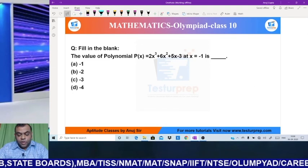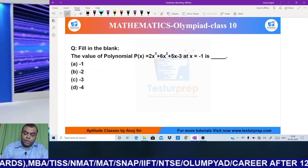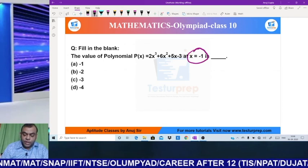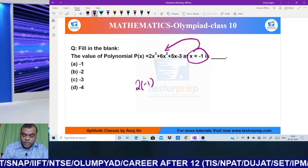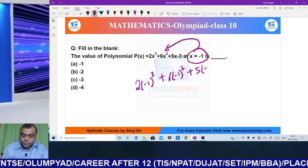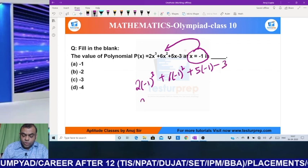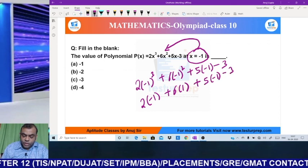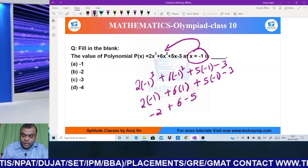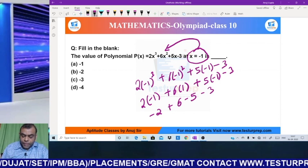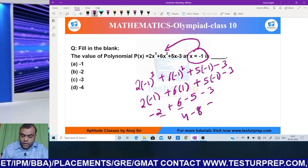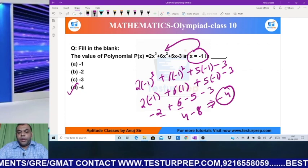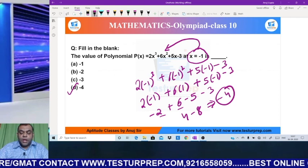Now moving on to the last question of this slide. It says that the value of polynomial at x equal to minus 1. If you have to find the value of any polynomial at x equal to any given value, simply put minus 1 in place of x. So this will become: 2 into minus 1 cube is minus 1, minus 1 squared is 1, 5 into minus 1 minus 3. So minus 2 plus 6 minus 5 minus 3. So this will become minus 2 plus 6 would be 4 minus 8. So my ultimate answer is minus 4. This is called evaluating the function at any given point.